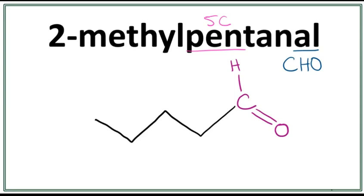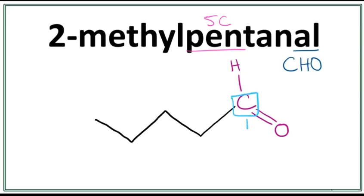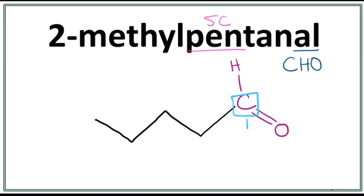Now let's number these carbons. The carbon in the functional group is always the first carbon. The second carbon, the third carbon, the fourth carbon, and the fifth carbon. Now there is a methyl attached on the second carbon right here.